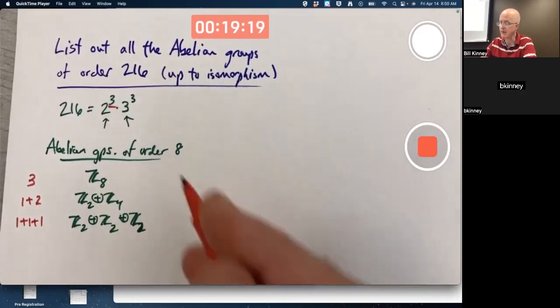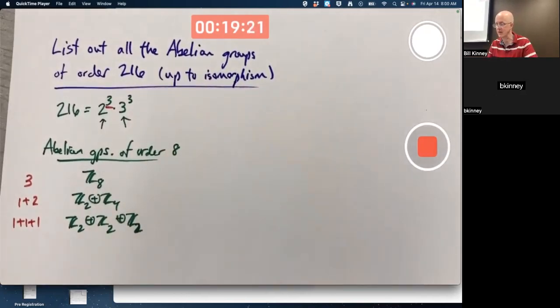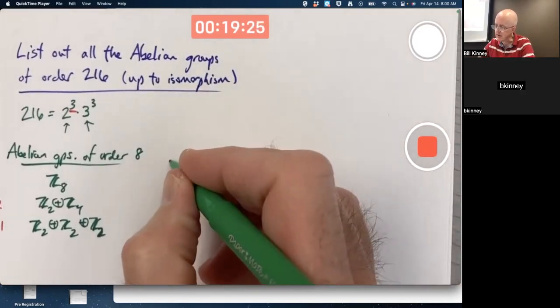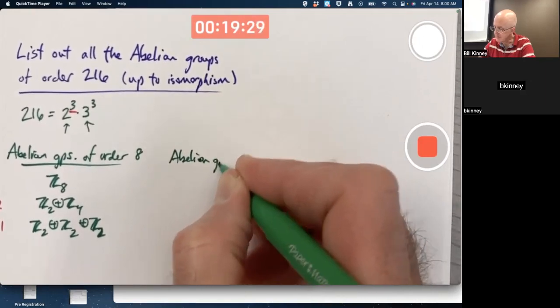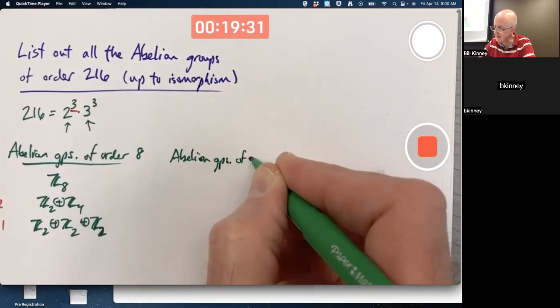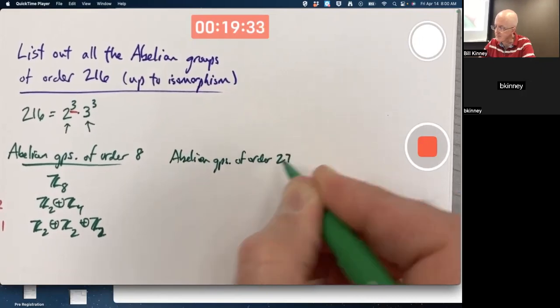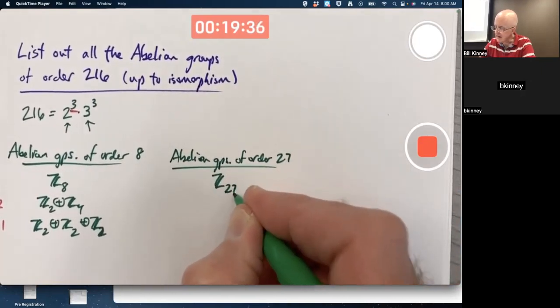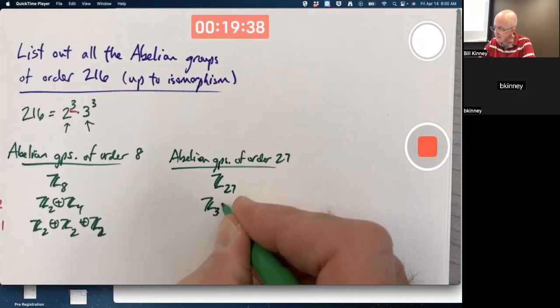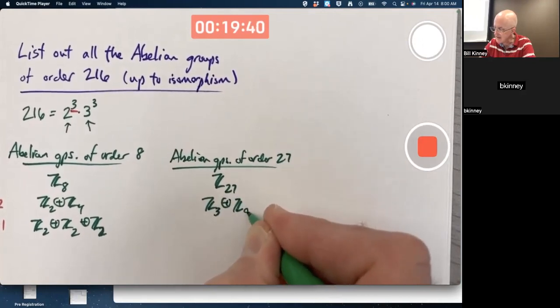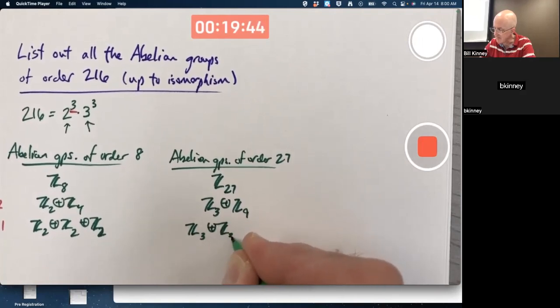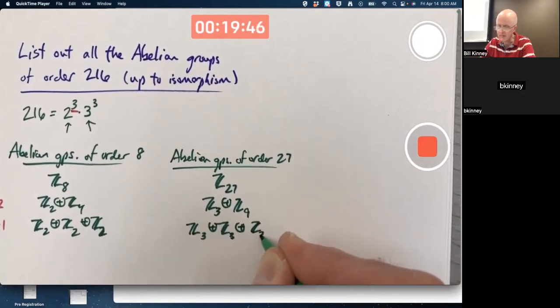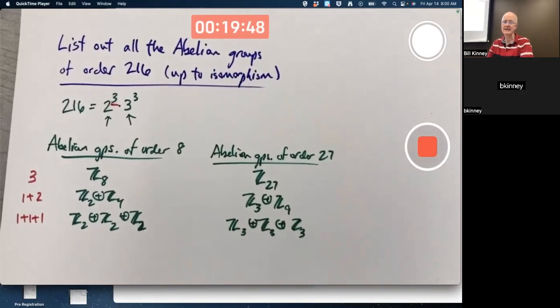And a similar kind of thing is going to happen when we think about Z₂₇, or abelian groups of order 27, which I'll put over here. Abelian groups of order 27: Z₂₇, Z₂₇, Z₃ with Z₉, and 3 factors of Z₃.